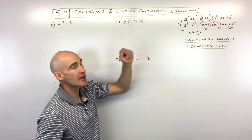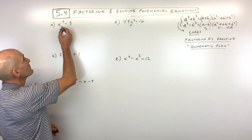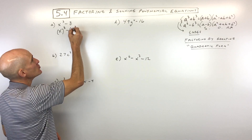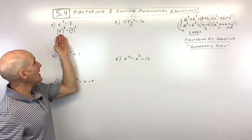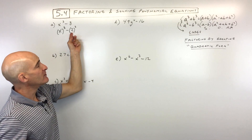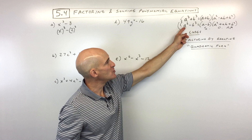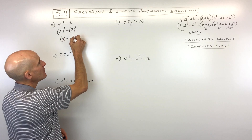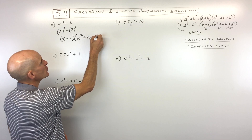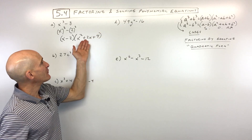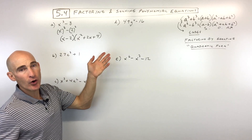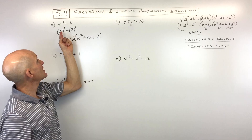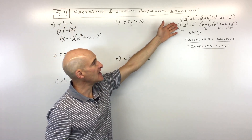For example a, x cubed minus 8: x cubed is a perfect cube, and 8 is two times two times two — also a perfect cube. So our a value is x and b value is 2. Since it's a difference of two cubes, we use the second formula and expand: x minus 2 times x squared plus 2x plus 4. You won't be able to factor the trinomial further — that's as far as we can go. Always start with the greatest common factor, then identify your a and b values from the cube roots.